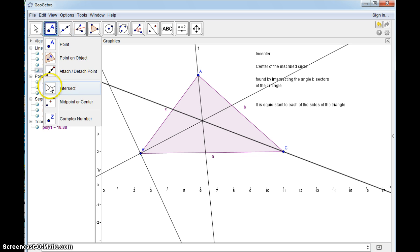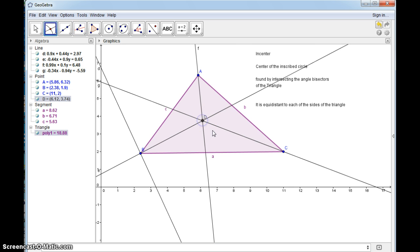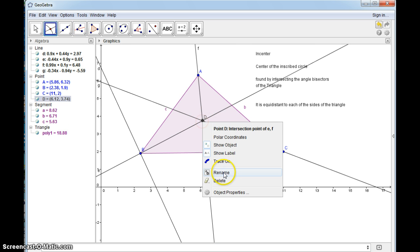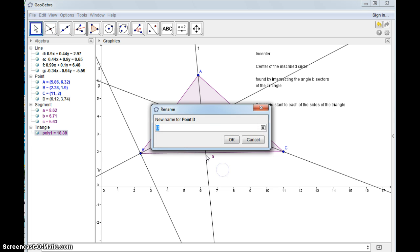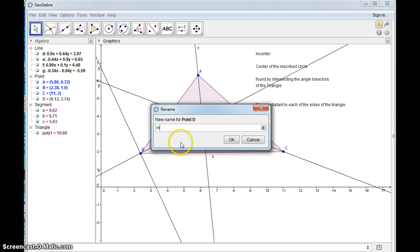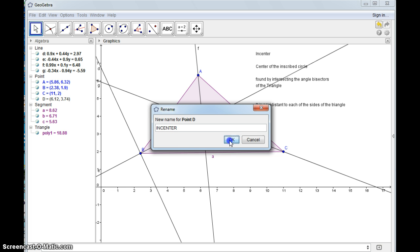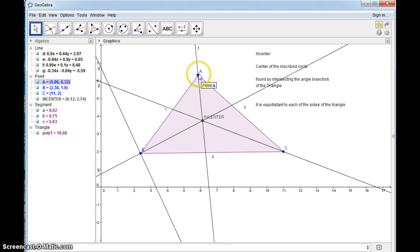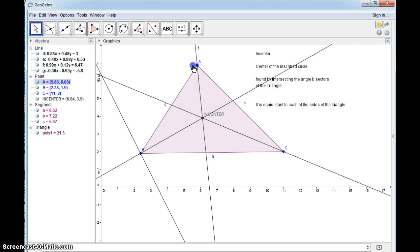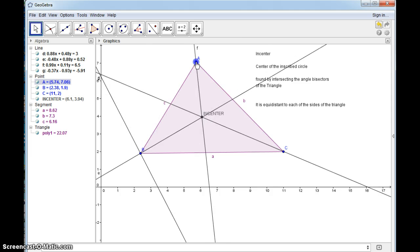Now let's intersect these. So this is the incenter. I'm going to rename it. This intersection of the angle bisectors is a construction so I can move this around.